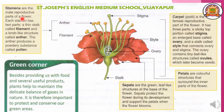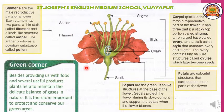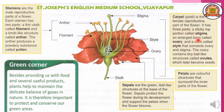Stamens are the male reproductive part of a flower. Each stamen has two parts: a thin stalk called filament and a knob-like structure called anther. The anther produces a powdery substance called pollen grains. Carpel is another name for pistil — the female reproductive part of a flower. It has three parts: a sticky top portion called stigma, an enlarged base called ovary, and a stalk called style that connects the ovary and stigma.